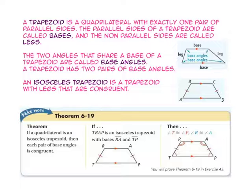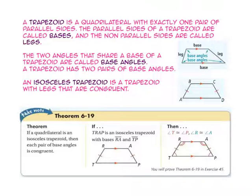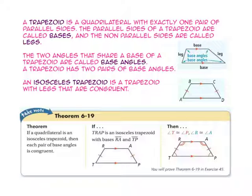A trapezoid is a quadrilateral with exactly one pair of parallel sides. The parallel sides of the trapezoid are called bases, and the non-parallel sides are called legs. The two angles that share a base of a trapezoid are called base angles. Each trapezoid has two pairs of base angles.